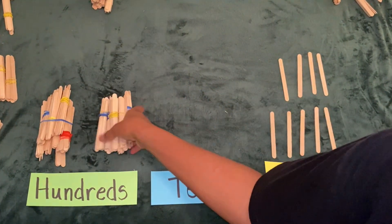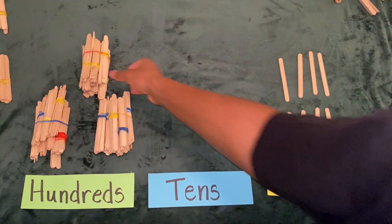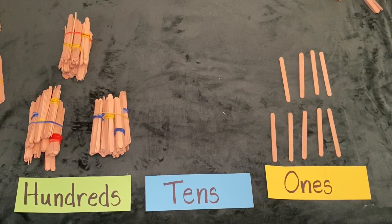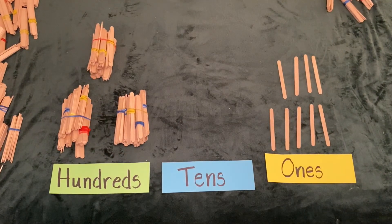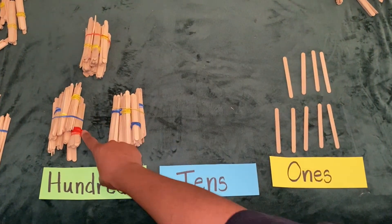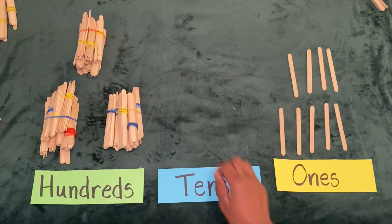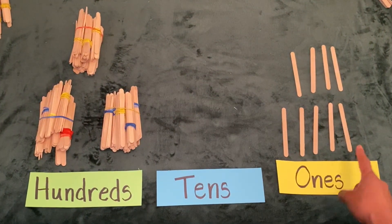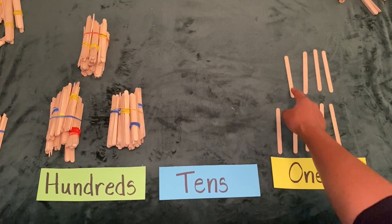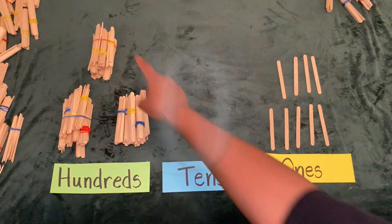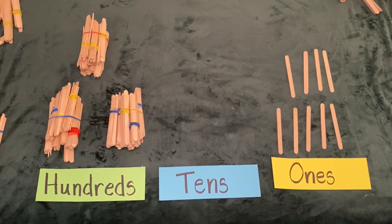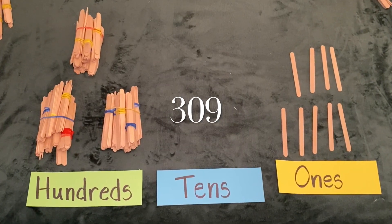Now let's see the new number that we have. Can you tell me what is this number? Let's count to figure it out. There are three groups of 100 in the hundreds place — 100, 200, 300. There are no tens, friends, so there will be a zero in our tens place. And let's count our ones: 1, 2, 3, 4, 5, 6, 7, 8, 9. This means I have 309 as my number. Remember, there were no tens — the number is 3, 0, 9: 309.